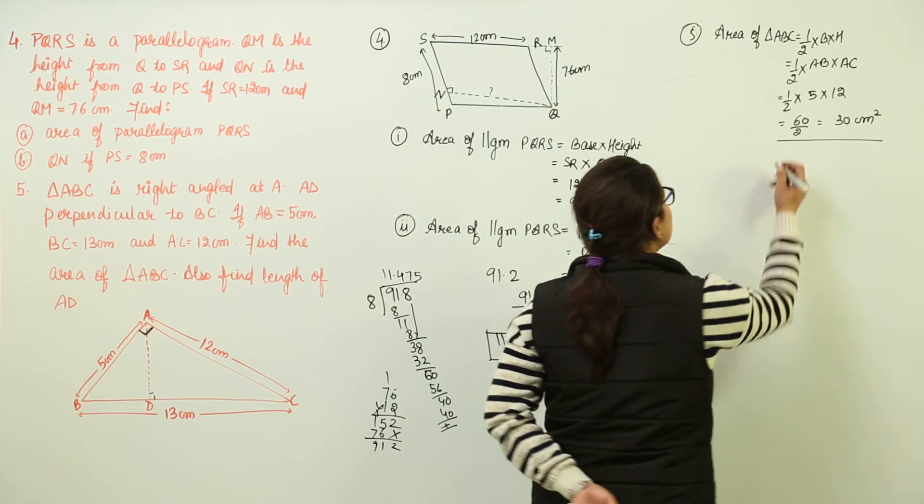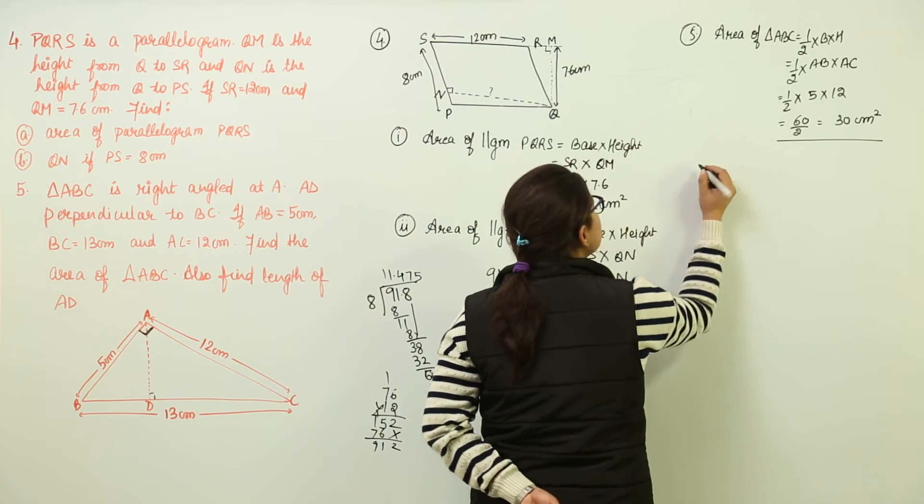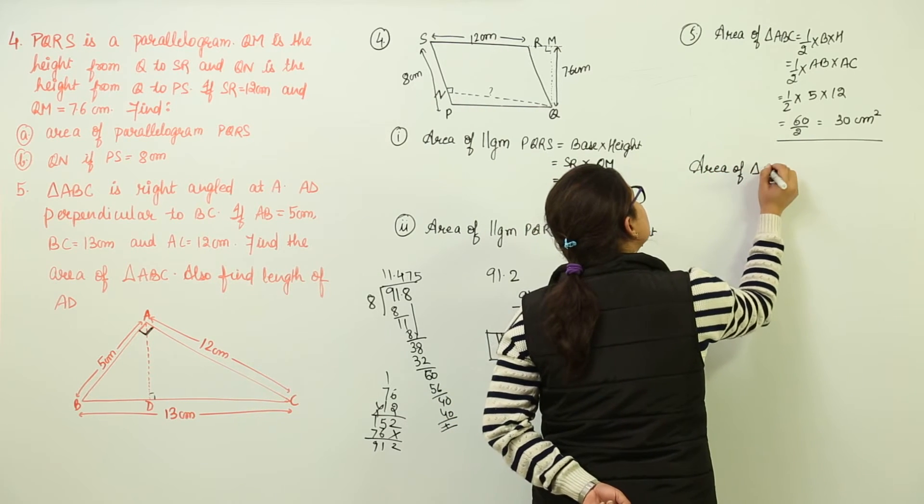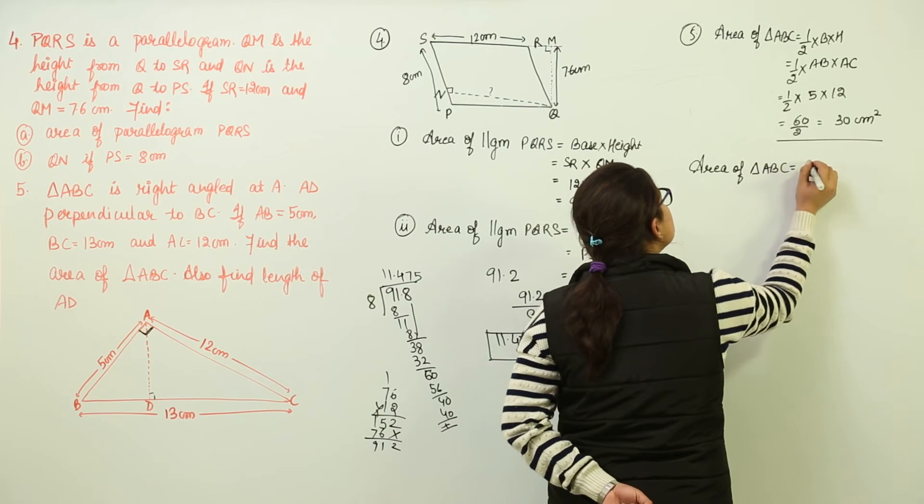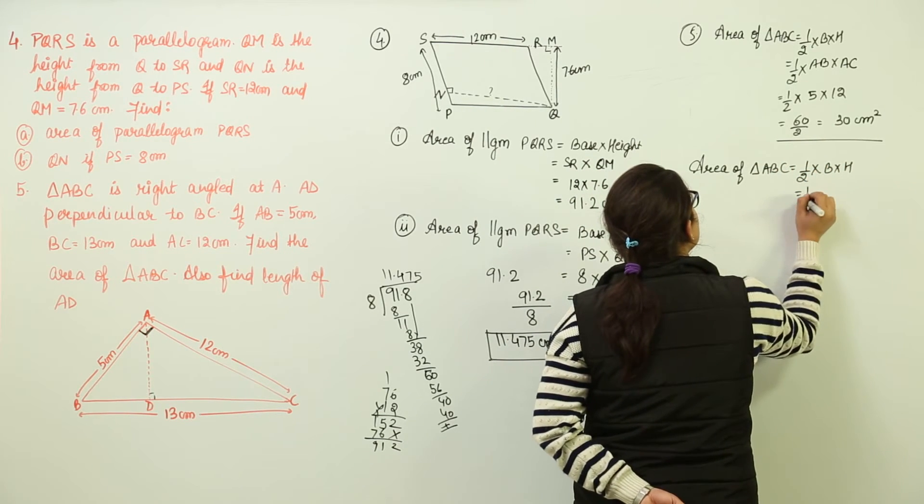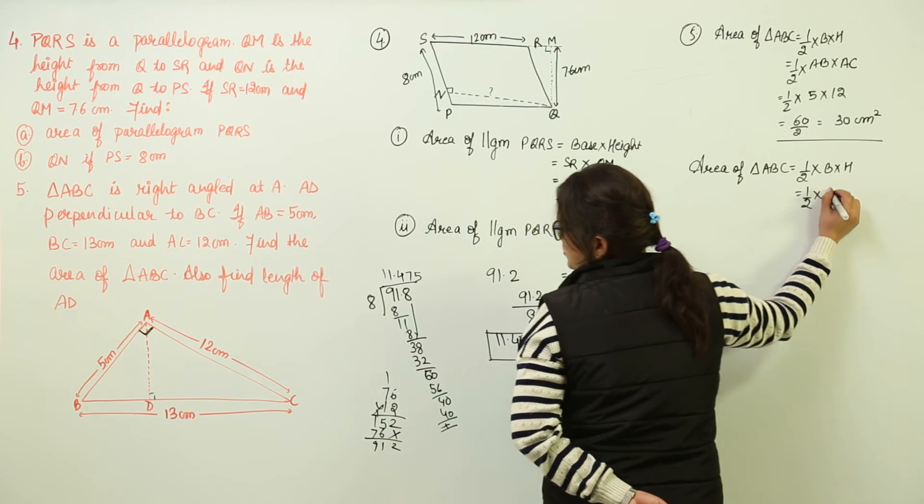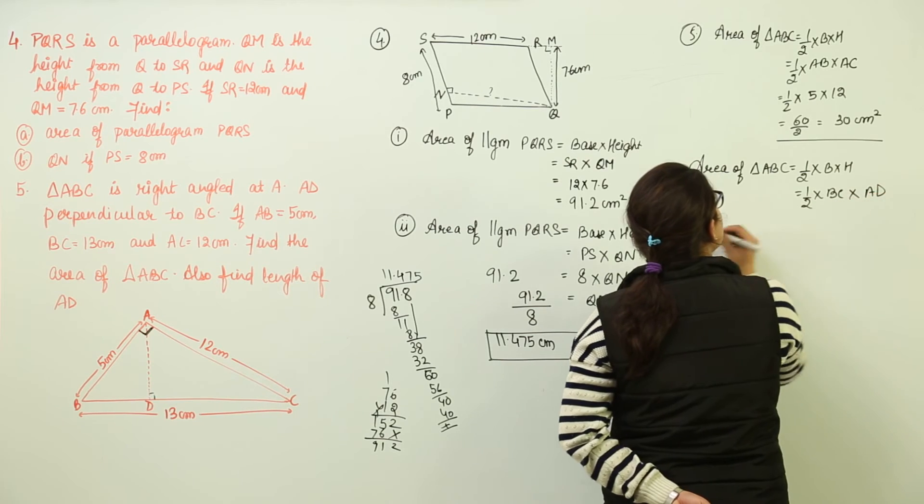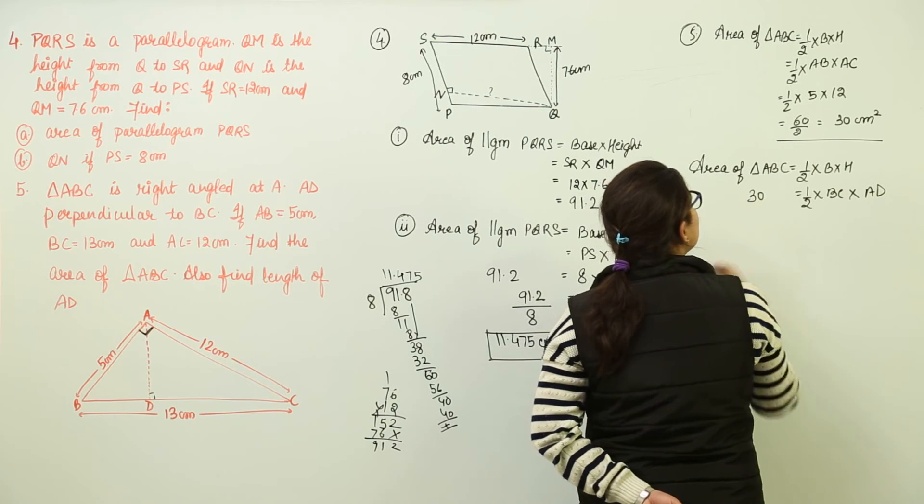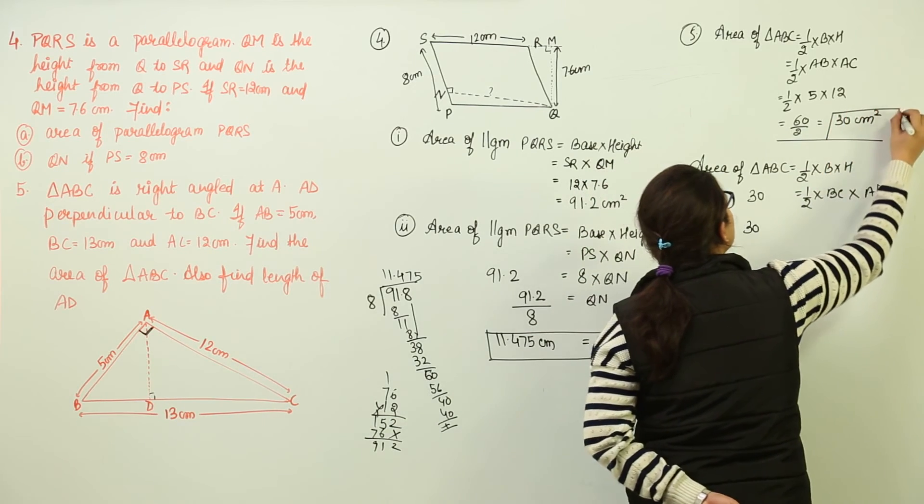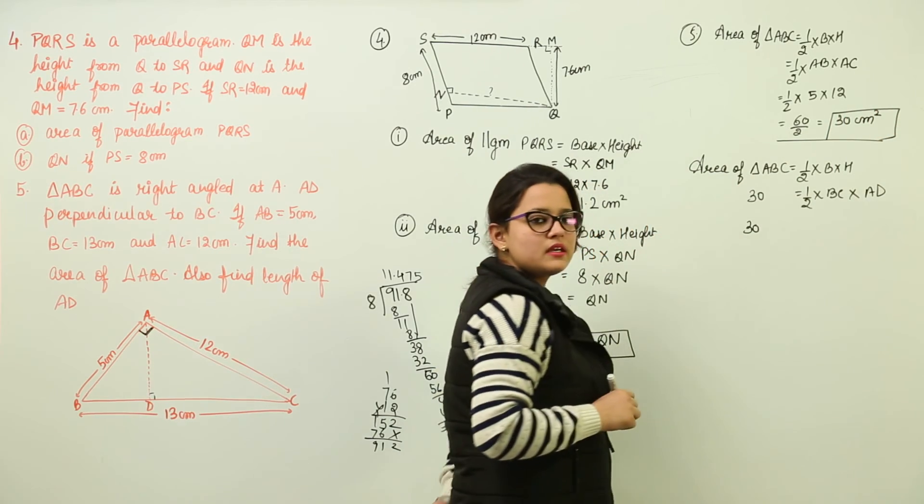So we can do the same. We can write in the next step that area of triangle ABC is equal to half base into height where the base has changed to BC and the height has changed to AD giving us all equal to 30. Because already we have found out that area of triangle ABC is 30 centimeters square.